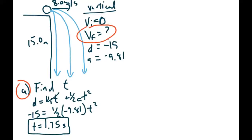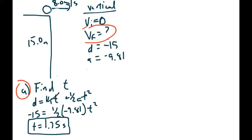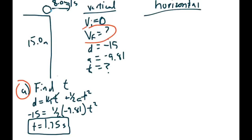Let's do an example. Suppose we're going 8 meters per second off the cliff and we're falling 15 meters — so the height of the cliff is 15 meters. Separating the information: vertically, initial velocity is 0, distance is negative 15 m, acceleration is 9.81 m/s² downward, and final velocity and time are unknown. Horizontally, constant velocity is 8 m/s, time and horizontal distance are unknown.